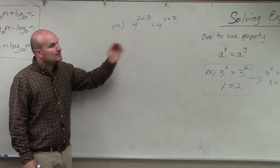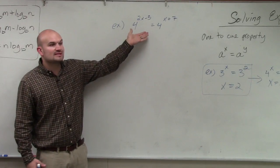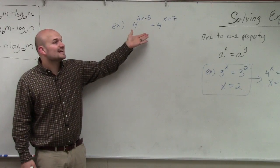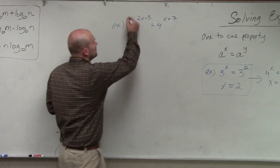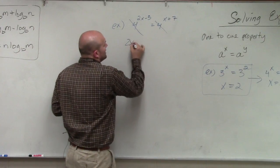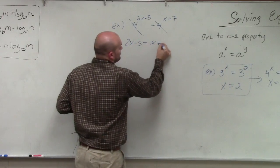So let's go to this example. Do we have two exponents with the same base? Yes, then guess what? Then what has to be equal to each other? The powers, right? 2x minus 3 equals x plus 7.